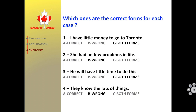The answers are: Number 1 — 'I have little money to go to Toronto.' Both forms are correct: 'I have little money' or 'I have a little money.' Number 2 — 'She had a few problems in life.' Both forms are correct: 'She had few problems' or 'She had a few problems.'